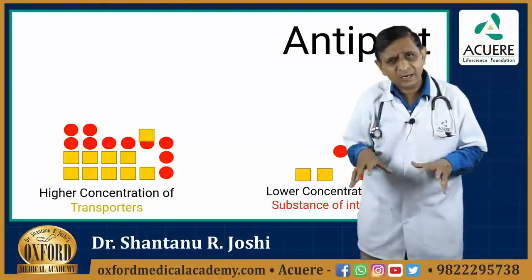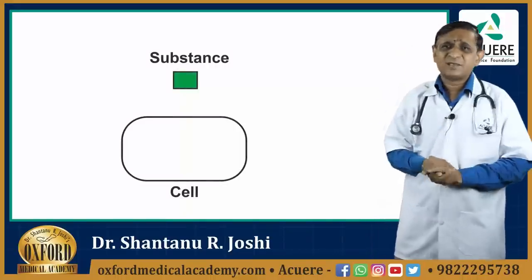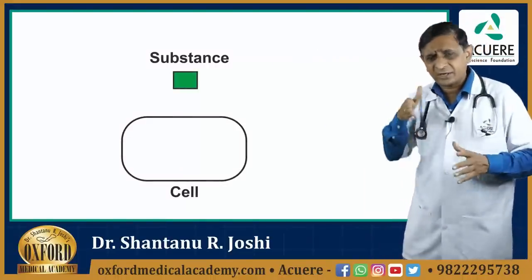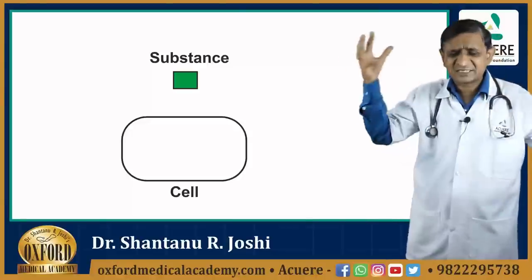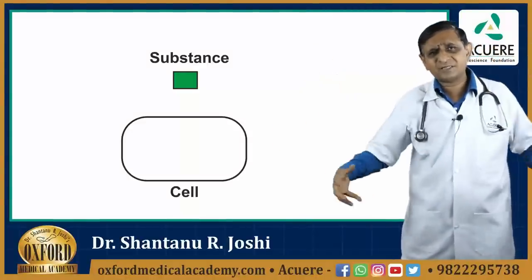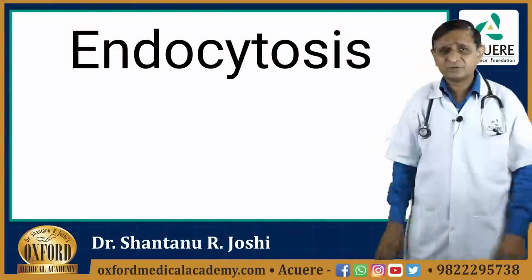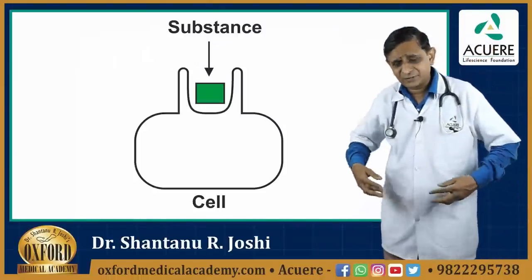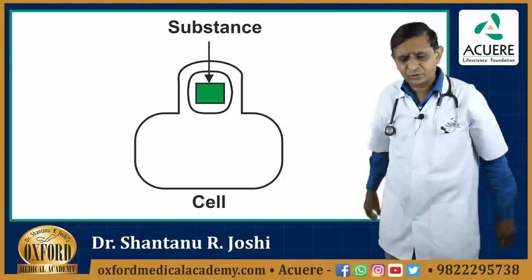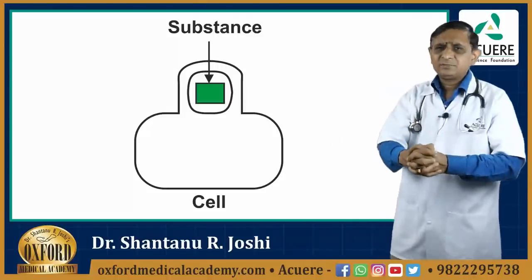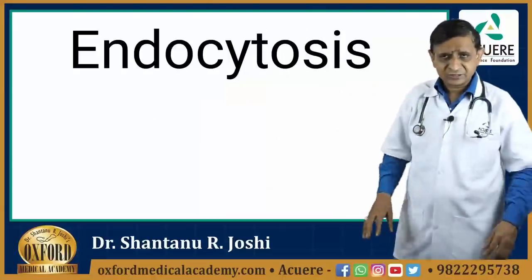Now this is all related to transport through the membrane through the channel. But dear students, do remember, sometimes the substance is too big. It cannot be transported through the channel, and neither can the transporter help for the transport of this big substance. When such a big substance is to be taken from outside to inside of the cell, we call it endocytosis. The cell develops a pseudopod around that substance. The outer part of the pseudopod is going to fuse with each other, and the inner part will dissolve of its own, and this is how the substance will enter the cell. This is known as endocytosis.